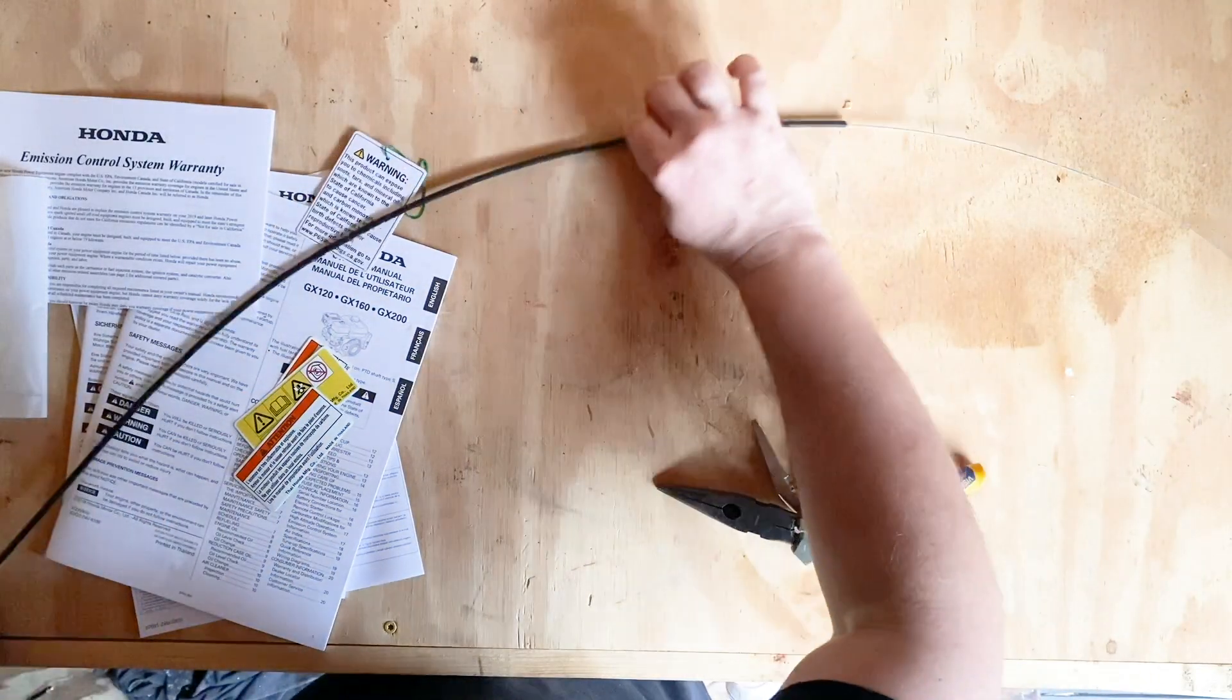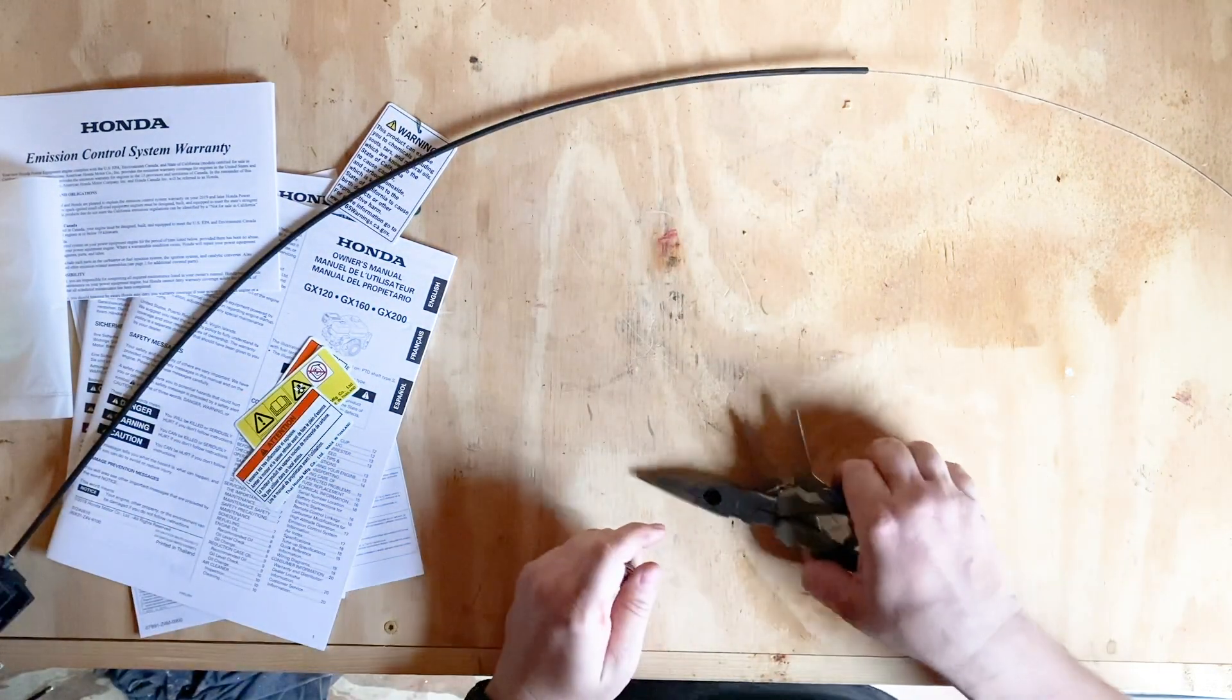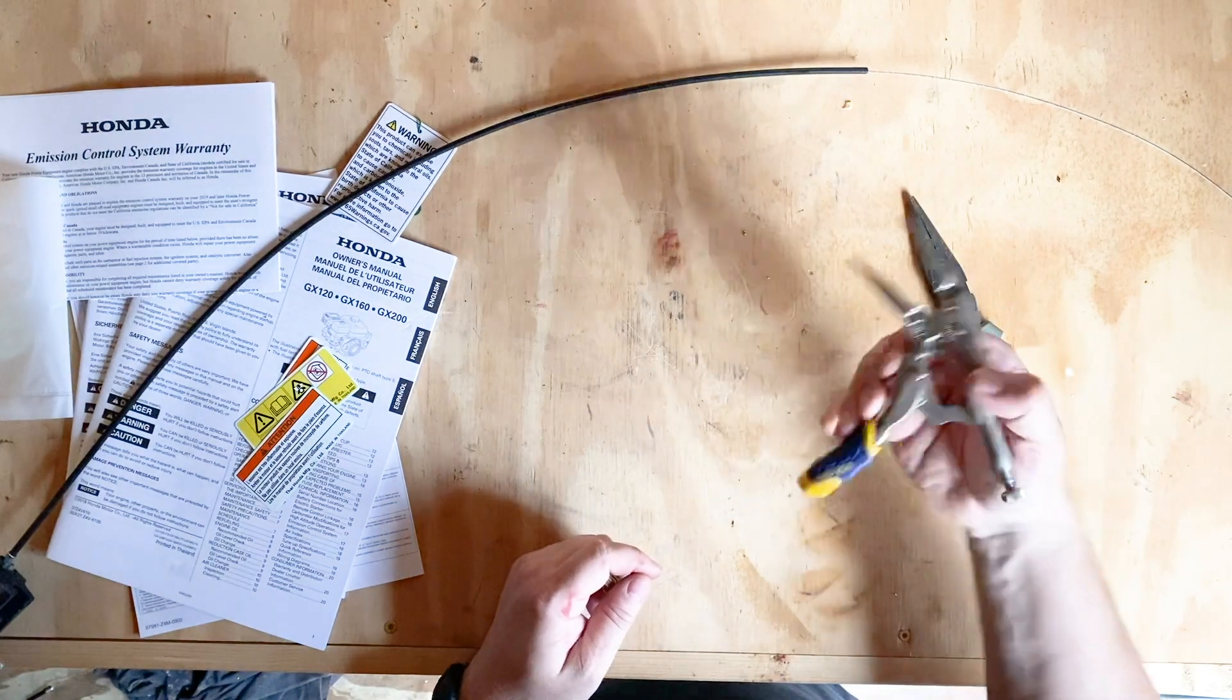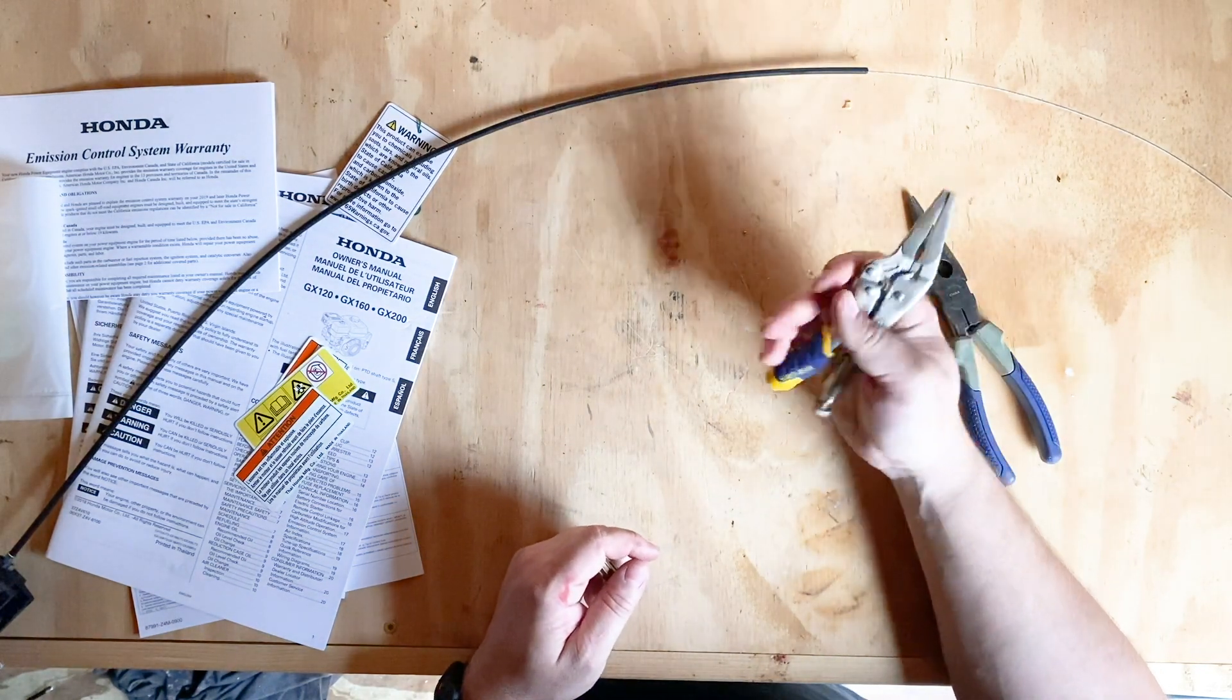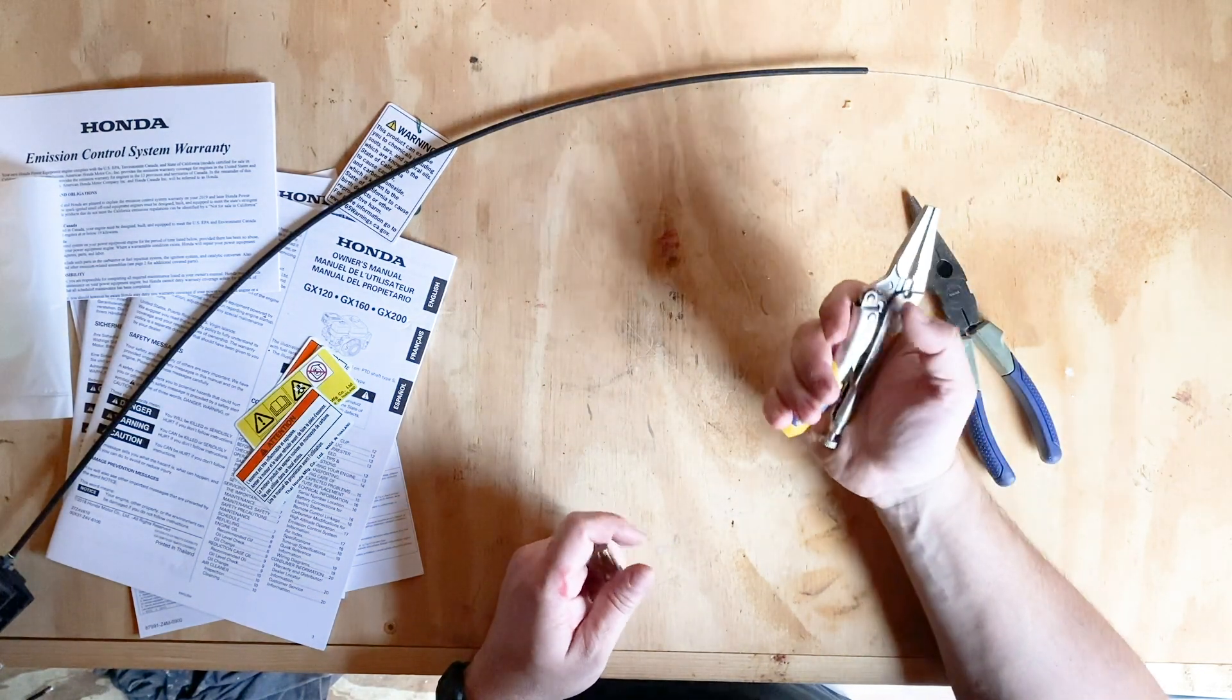I'm going to show you how to make a z-bend in a throttle cable. You're going to need two things. Try to have a pair of vice grips with a needle nose head on it. It'll make your life a lot easier.